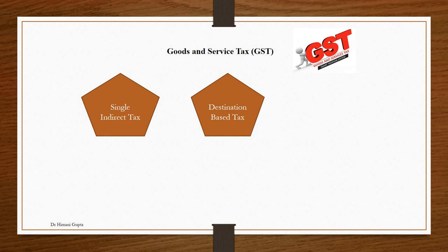GST is a destination-based tax. If a transaction happens between two states — buyer in State 1 and seller in State 2 — the tax goes to the state where the consumer is located. Before GST, under CST (which was also applicable on interstate sales), the tax went to the state where the seller was. But under GST, the tax goes to the state where the end consumer is. For example: Delhi seller sold to Haryana, Haryana buyer sold to MP dealer, MP dealer sold to Kerala consumer — so GST goes to the Kerala government.